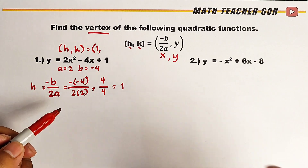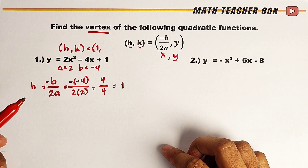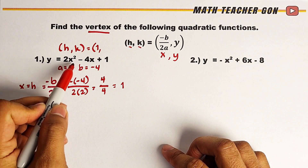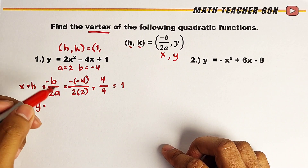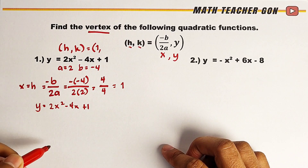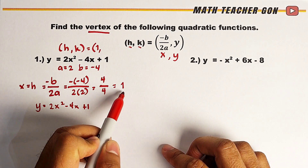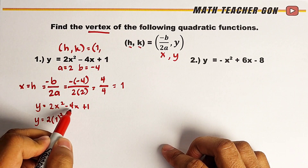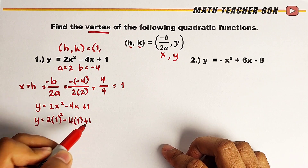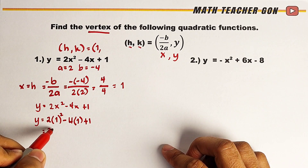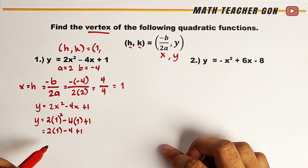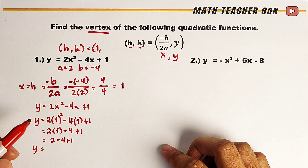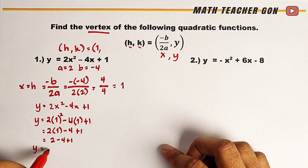Now let's find out the value of k. To find k, what we need to do is plug in the value of h, because h is the same as the value of x. So we will evaluate this function. We have y is equal to 2x squared minus 4x plus 1. Plugging in 1: y is equal to 2 times 1 squared minus 4 times 1 plus 1. Simplifying: 2 times 1 minus 4 plus 1, which gives 2 minus 4 plus 1.